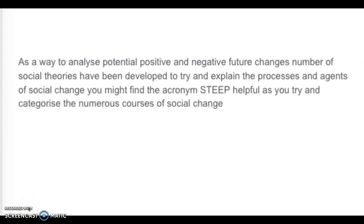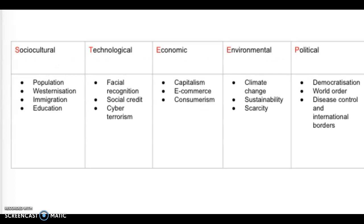We understand that the four different theories attempt to explain how and why structural change occurs, but we also need to spend some time considering what actually causes social change to start with. We refer to this as the processes and agents of social change. The best way to analyse and remember this is to use the acronym STEEP. It helps you categorise the different types and causes of social change, and I'm going to show you a table that has some examples in it now.